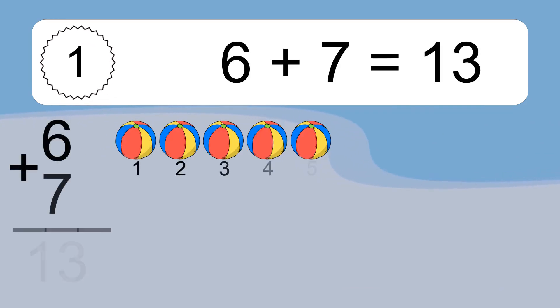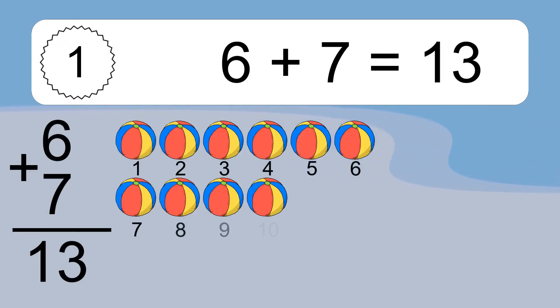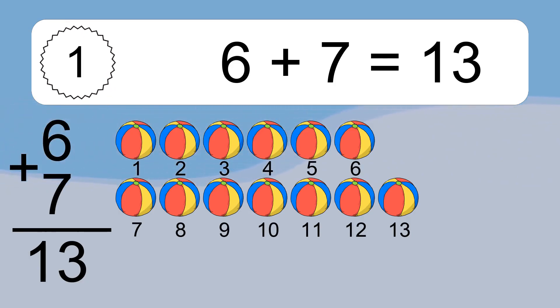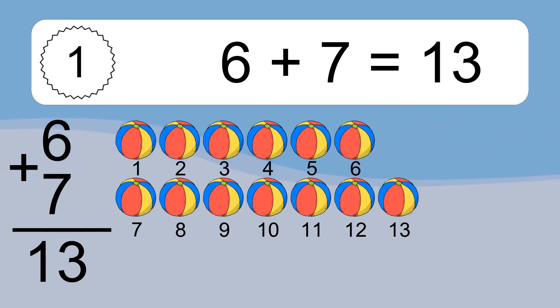6 plus 7 equals 13. Let's count it: 1, 2, 3, 4, 5, 6, 7, 8, 9, 10, 11, 12, 13.